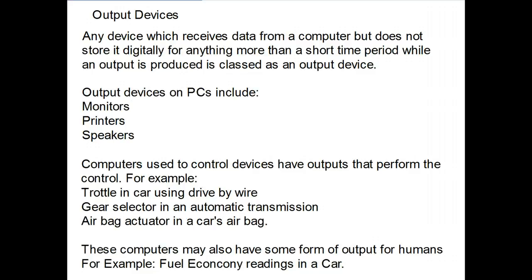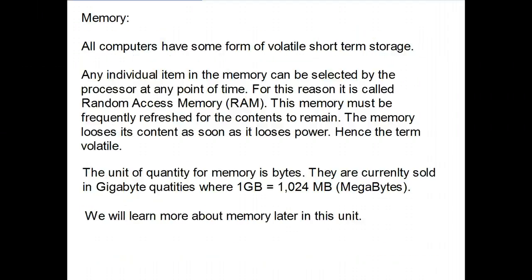Output devices: any device which receives data from a computer but does not store it digitally for more than a short period of time while an output is produced is classed as an output device. Output devices on PCs include monitors, printers, and speakers. Computers also use control outputs — for example, a throttle in a car using drive-by-wire, a gear selector in an automatic transmission, and an airbag actuator that deploys the airbag. These computers may also have outputs for humans, such as fuel economy readings in a modern car.